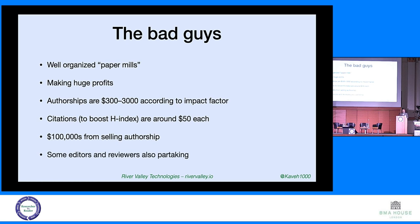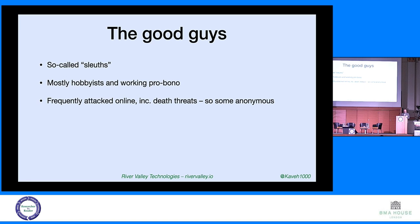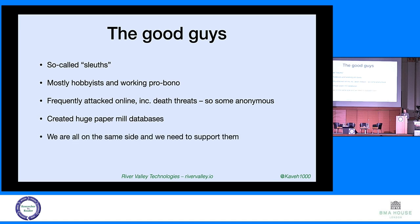Unfortunately, some editors and reviewers are taking part — you'll get a few hundred dollars to pass a paper through. The good guys are the so-called sleuths. You've heard of people like Elizabeth Bick, the most famous one looking at images. Most of these are hobbyists working for no money, but they're really doing a good job. They're frequently attacked online — there are even death threats, so some are anonymous. They've created some interesting data and paper mill databases that are available to look at.